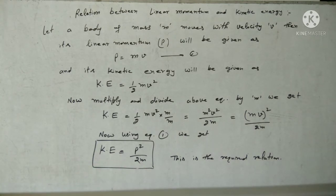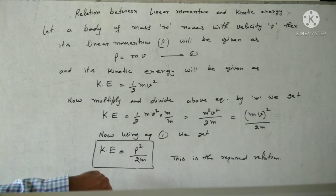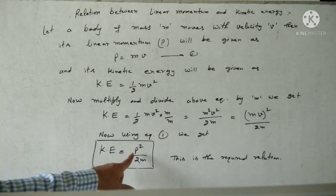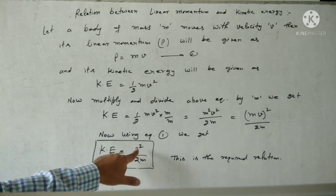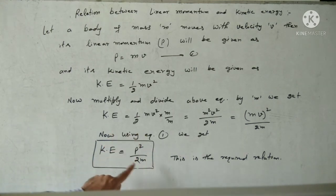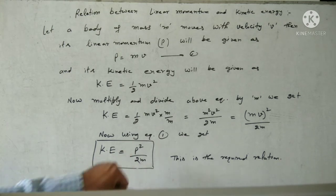For example, if momentum of a body is doubled, then what is the change in its kinetic energy? If we double the momentum to 2P, then 2P square gives 4P square. So if we double the momentum, kinetic energy will be 4 times.